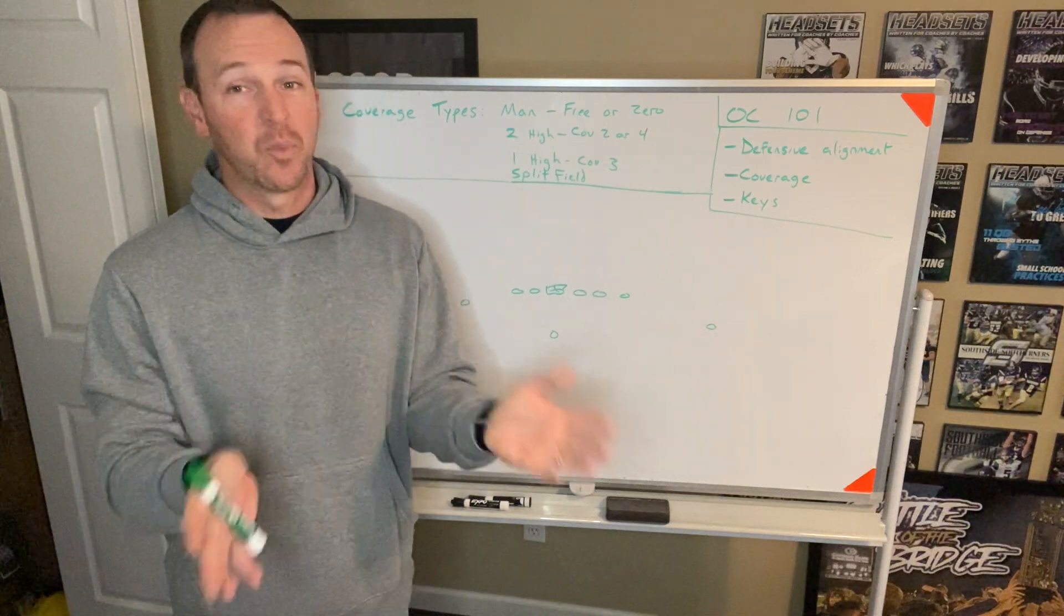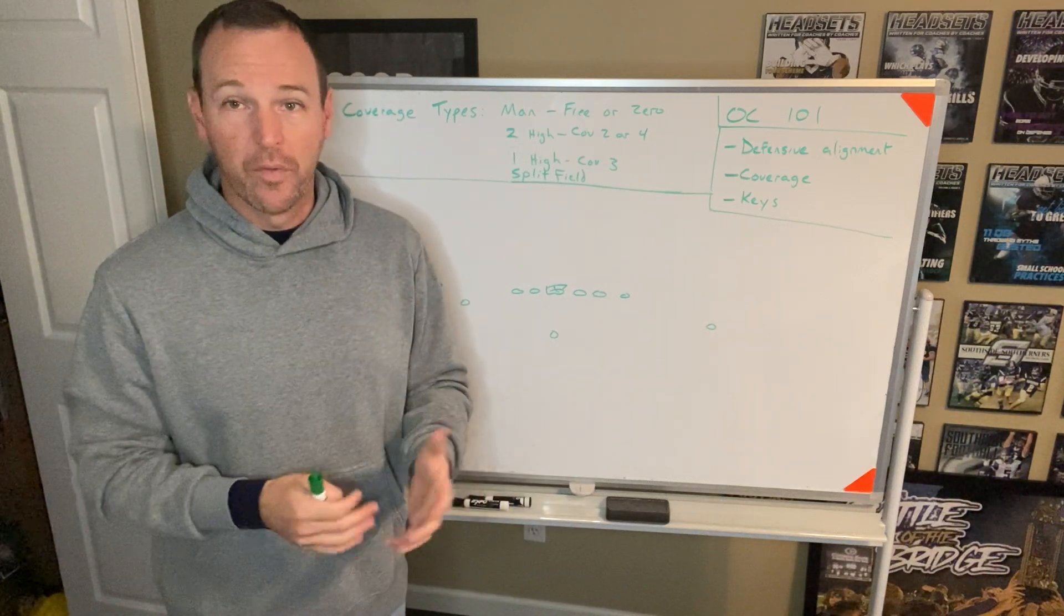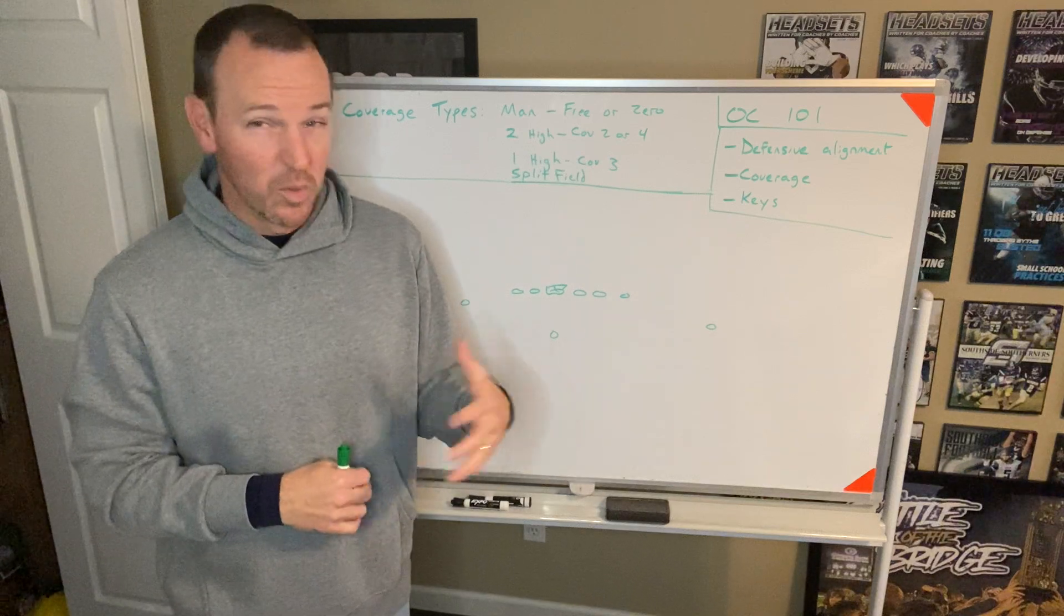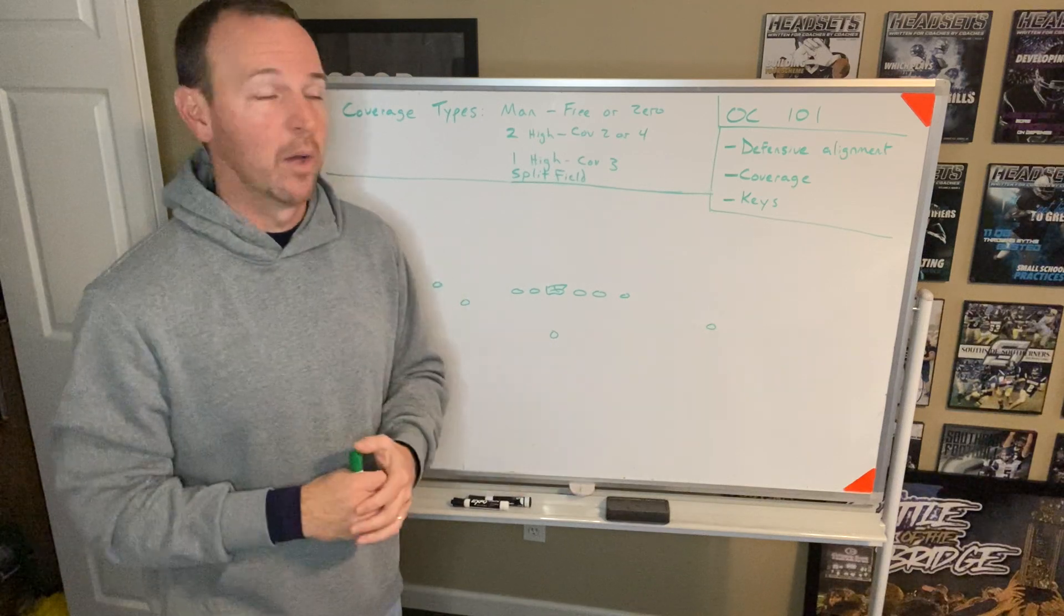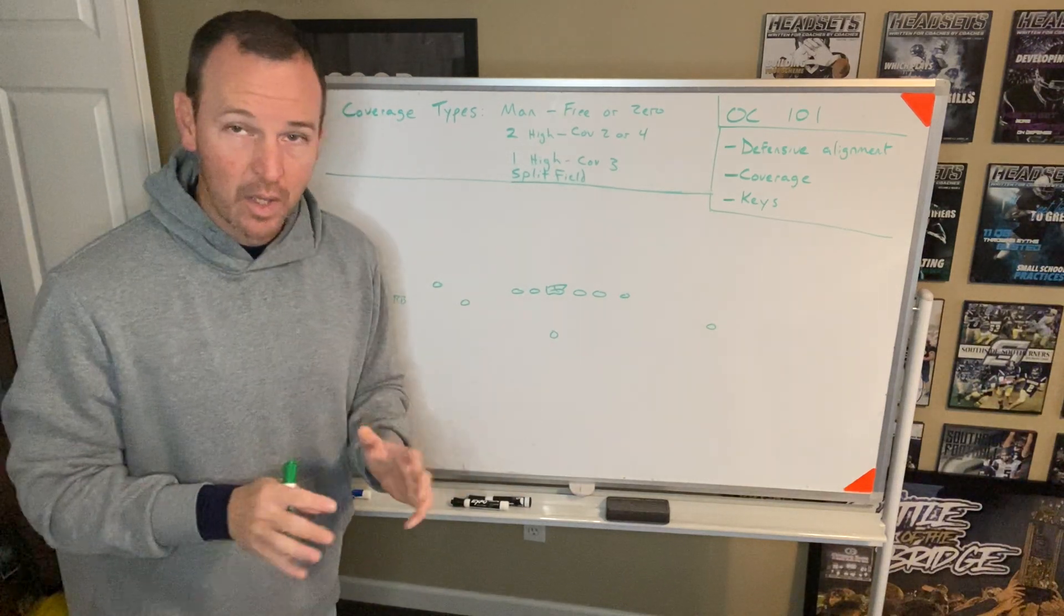So as an offensive coordinator, that's a watch process. How do I figure out what they're in? Man is usually relatively easy to identify, but how do I figure out what zone they're in, who's going where? Well, a couple of little quick tips that may help you.